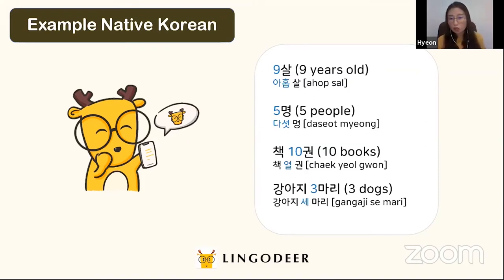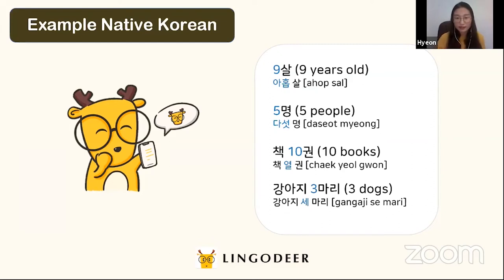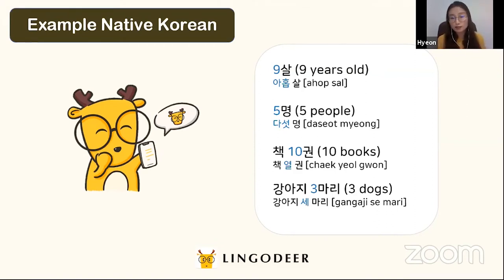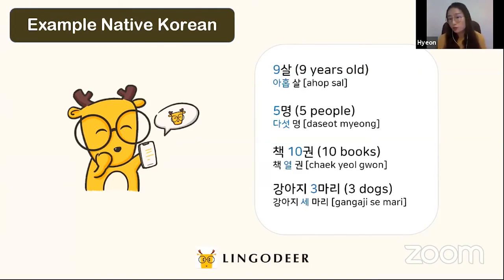Another example: 다섯 명 — five people. Since we are counting people, we use Native Korean number 다섯. Next: 책 열 권 — ten books. We are counting things (books), so we use Native Korean number 열 for ten. 책 열 권.